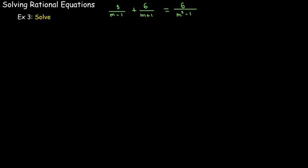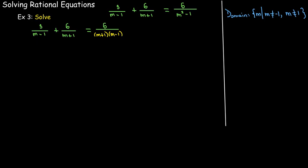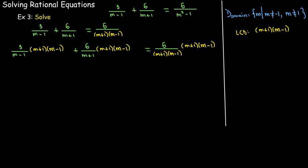In our last example, I have to do some factoring first before I can identify the domain and the LCD. After I factor m squared minus 1 as m plus 1 times m minus 1, I see that the domain is that m cannot equal 1, and it cannot equal negative 1. My LCD is m plus 1 times m minus 1. So I'll multiply each term by that LCD.